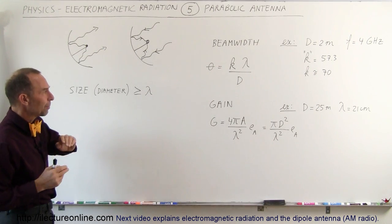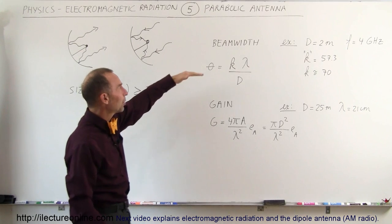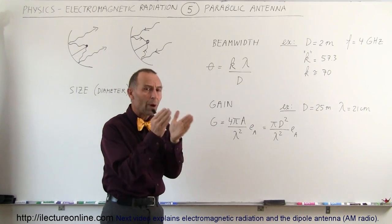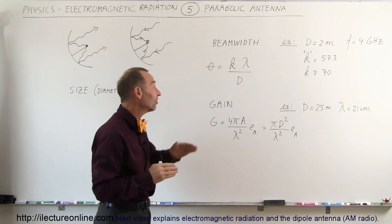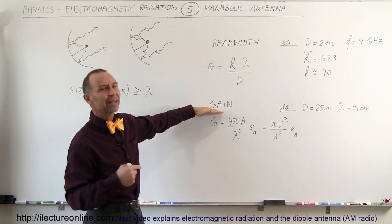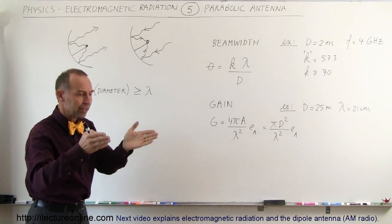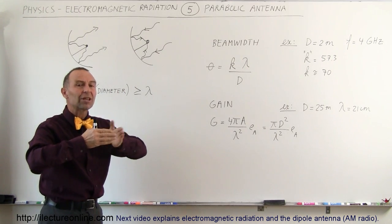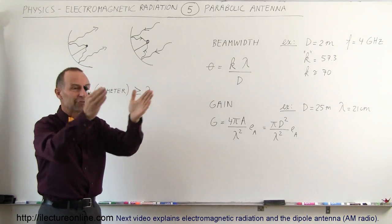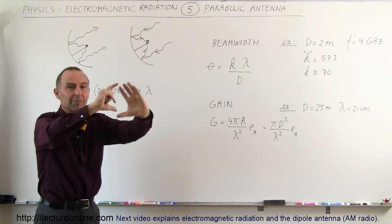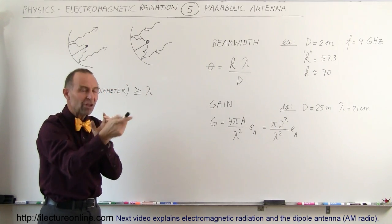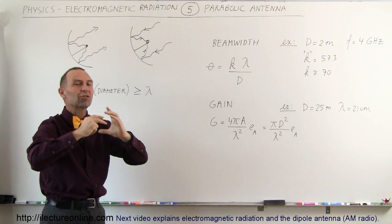Two of the big properties would be what we call the beamwidth - how wide the central maximum beam is - and how much gain you're getting out of the antenna. I have a couple examples to show you how that works. When you have a parabolic antenna you're going to send signals in all directions, but in the frontal direction directly away from the antenna in a pencil beam shape, you're going to have a narrow beam that has a much higher gain.